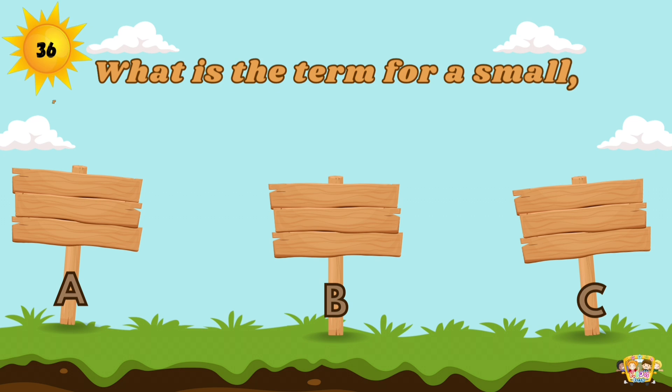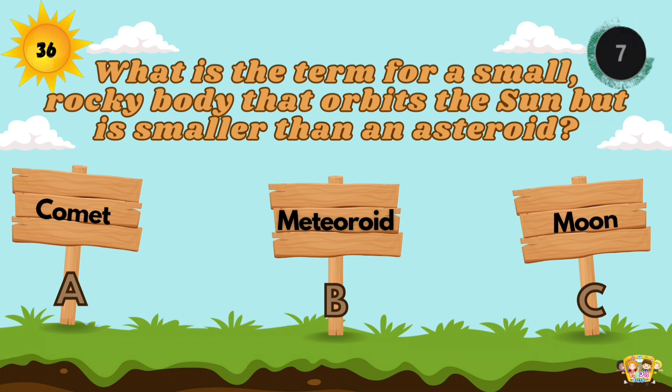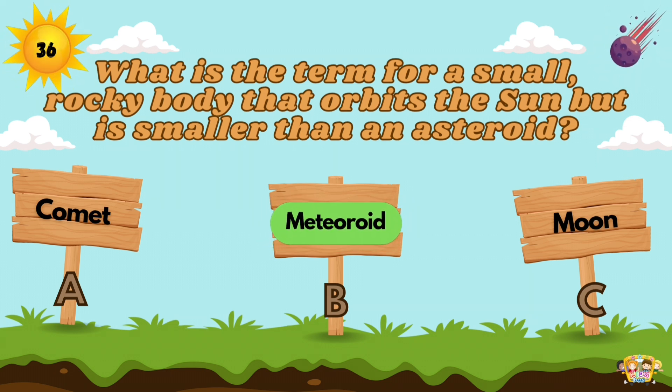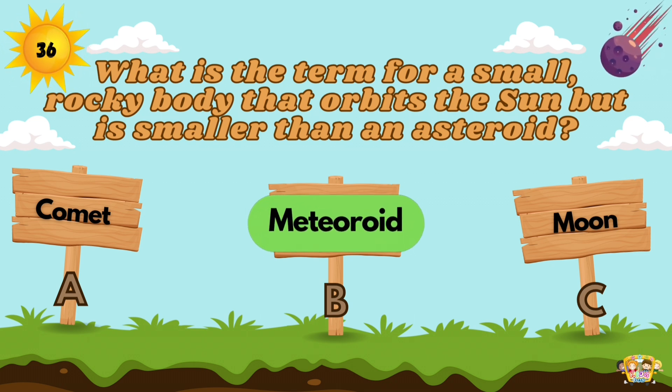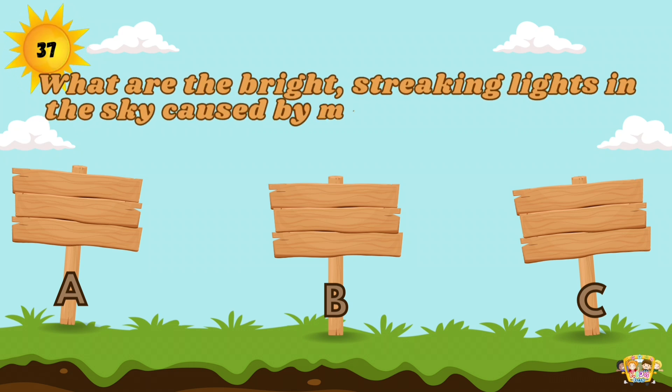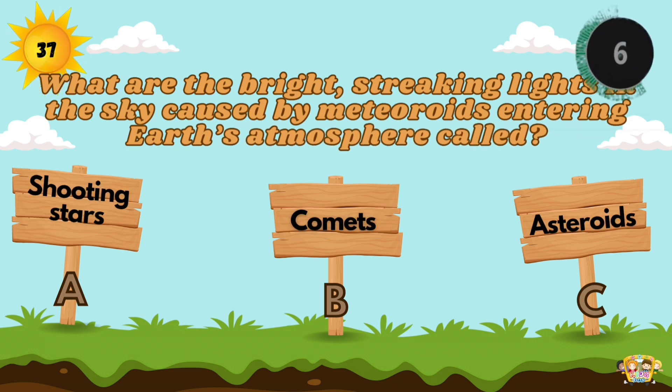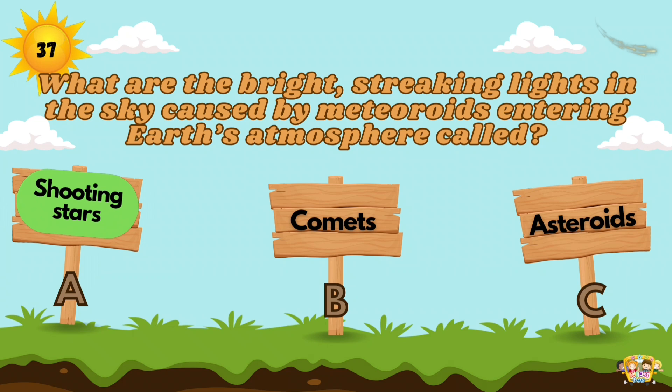What is the term for a small rocky body that orbits the Sun but is smaller than an asteroid? Meteoroids are space rocks that range in size from dust grains to small asteroids. What are the bright, streaking lights in the sky caused by meteoroids entering Earth's atmosphere called? A shooting star or meteor is a streak of light in the sky caused by a meteoroid passing through Earth's atmosphere.